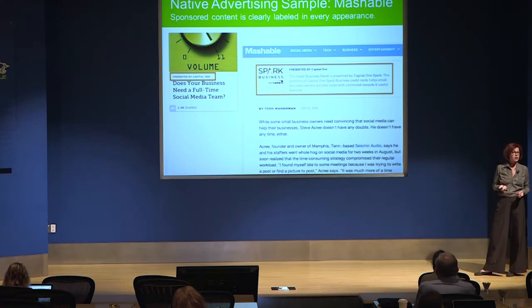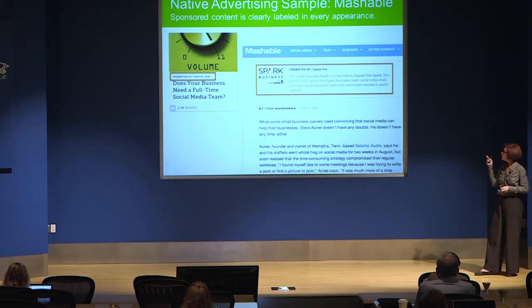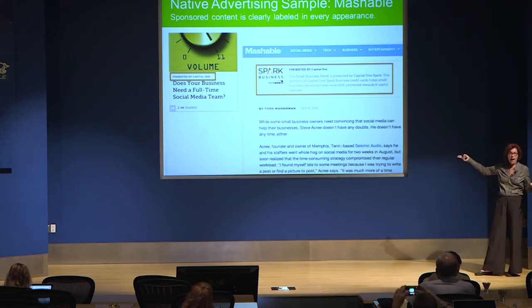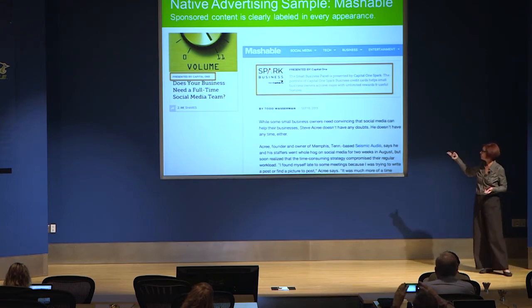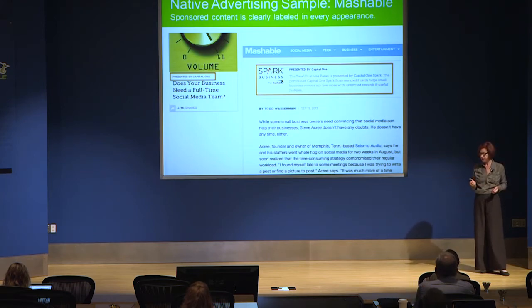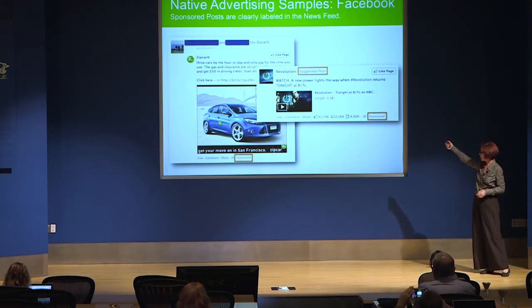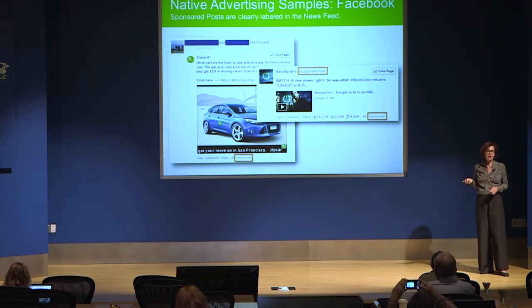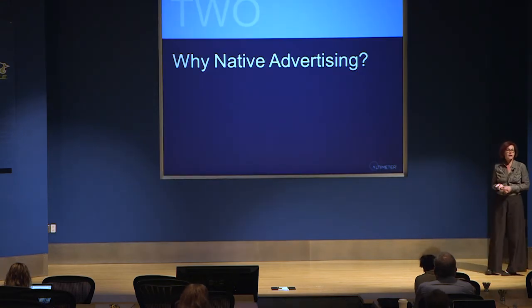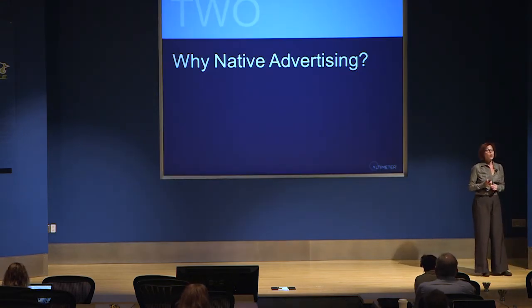Here's an example of a native advertising execution on Mashable — that traditional digital publisher execution. It's advertorial, written by Todd Wasserman who is on Mashable's staff, but presented by Capital One. There's a lot of disclosure around the fact that Mashable's editors did not commission this particular piece of content, but rather a brand did. And this is native advertising on Facebook — a suggested, promoted, or sponsored post — again with lots of disclosure around the fact that somebody is paying for you to see it in your news feed.